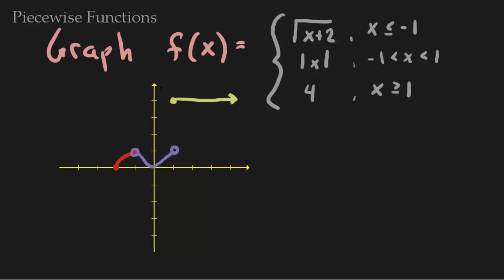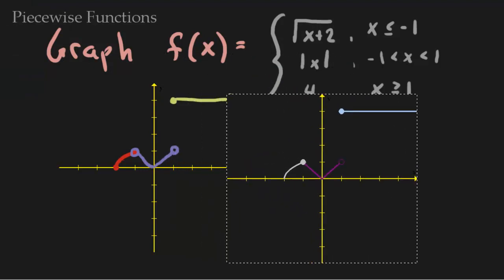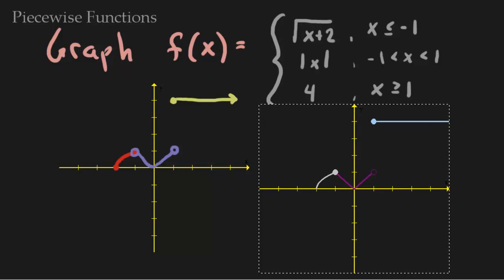And this is my piecewise function. Let me show what it looks like on a calculator so you can see how accurate this is. Here is the graph done on a calculator — you can see we are pretty accurate. There's the square root piece, the absolute value piece, the open dot, and y equals 4.